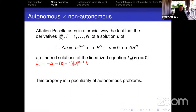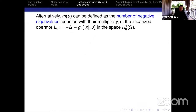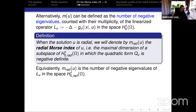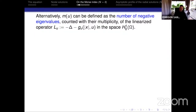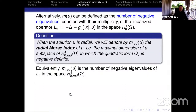The proof of De Paiva and Pacella does not extend to the non-autonomous problem. Very quickly: the Morse index of a solution of this problem is the maximum dimension of a subspace in H^1_0 in which the quadratic form — which is the second derivative of the functional evaluated at the solution u — is negative definite. This is the definition of Morse index. We have alternative definitions as well.